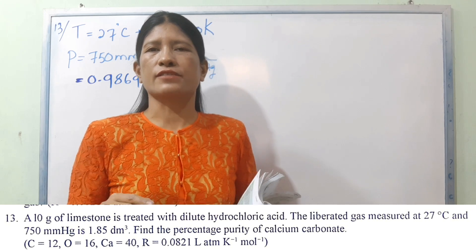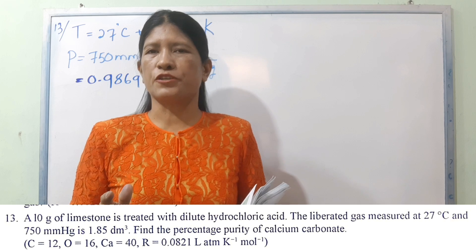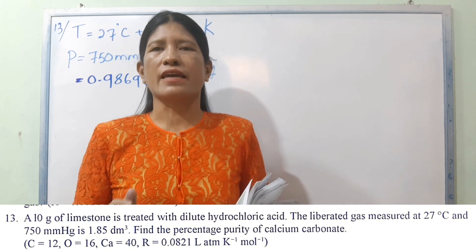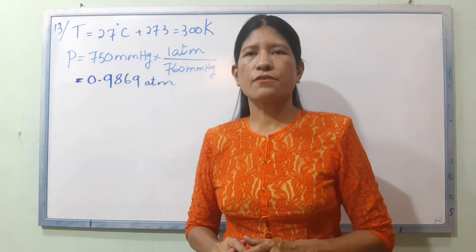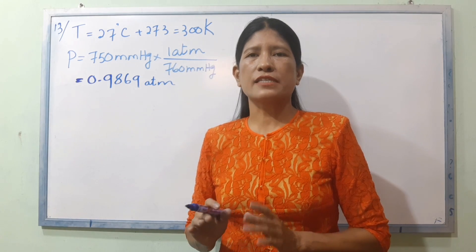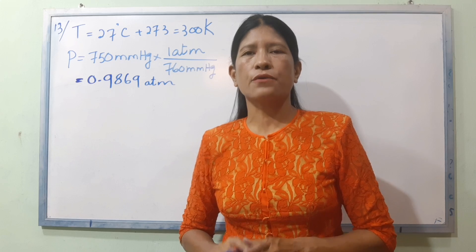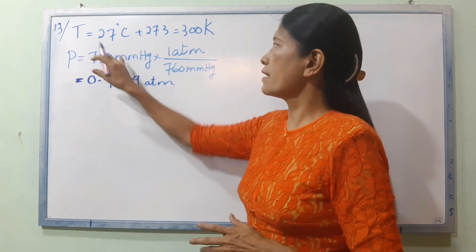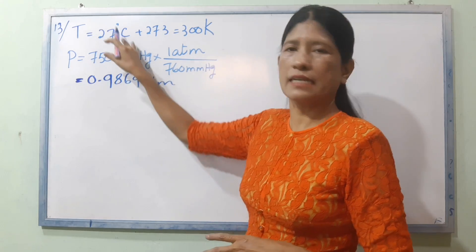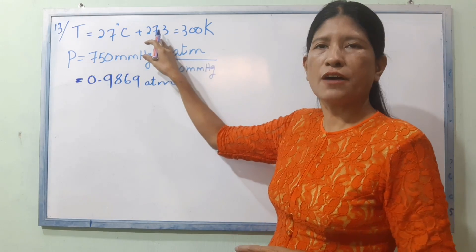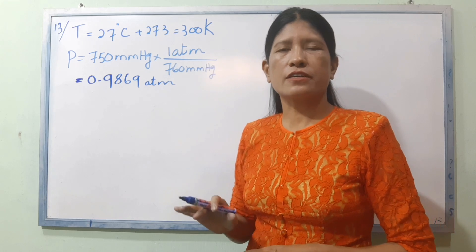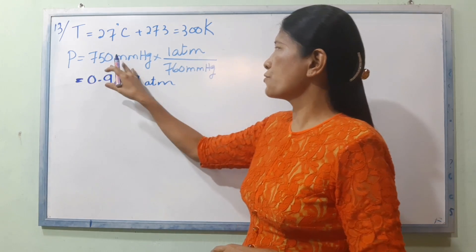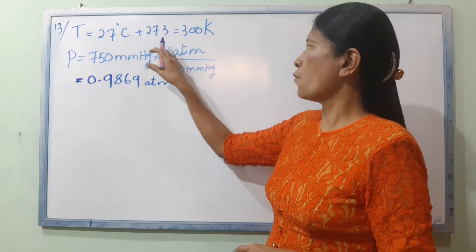The volume, pressure, and temperature are given. The temperature is 27 degrees Celsius, which is 300 Kelvin. The pressure is 750 mm mercury.